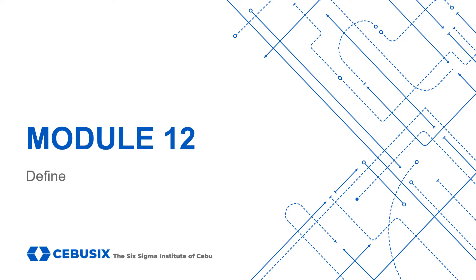Welcome to Module 12 of the Six Sigma Institute's Lean Six Sigma Certification Curriculum, which follows both the Council for Six Sigma Certification and the International Association for Six Sigma Certification Bodies of Knowledge. A full copy of the Council for Six Sigma Certifications Book of Knowledge can be downloaded from the Course Description section for free.